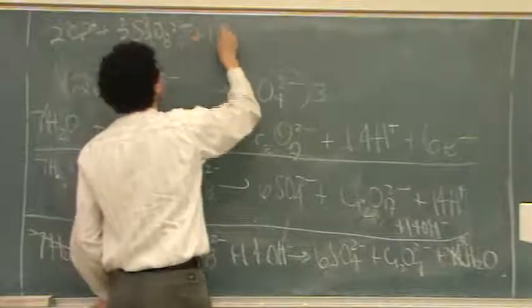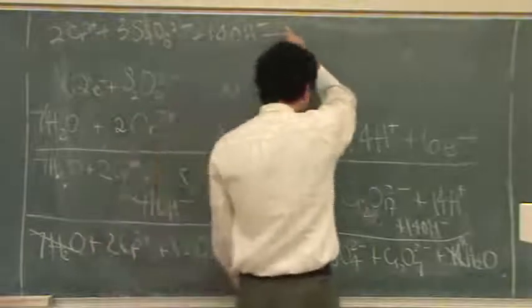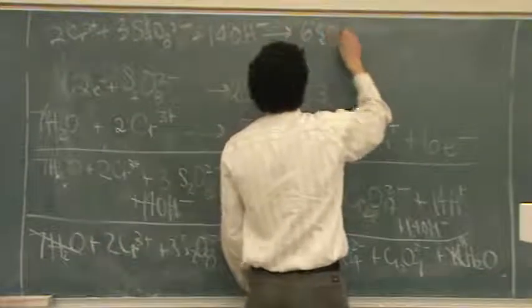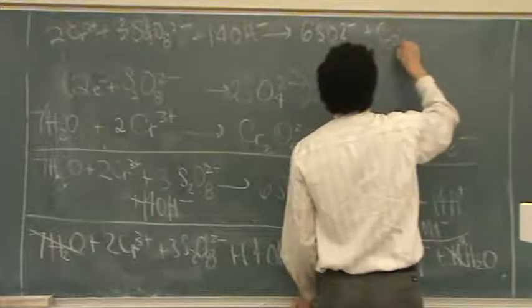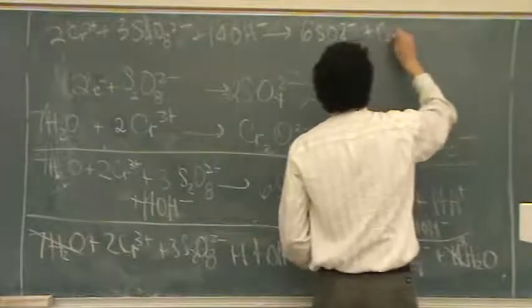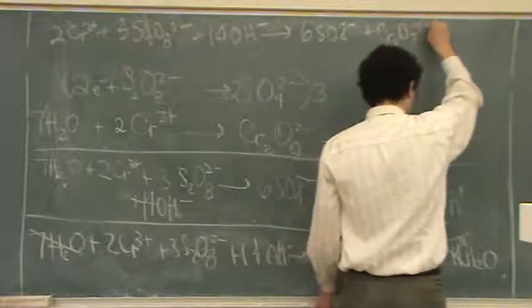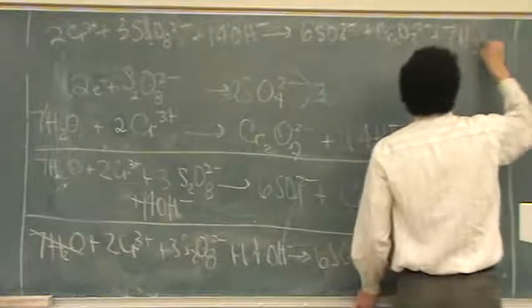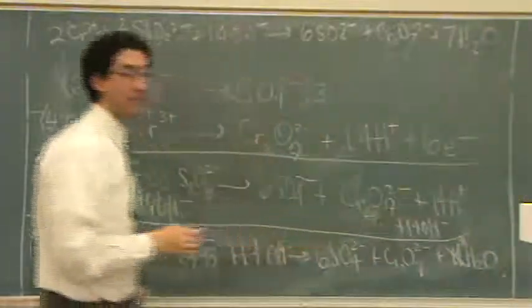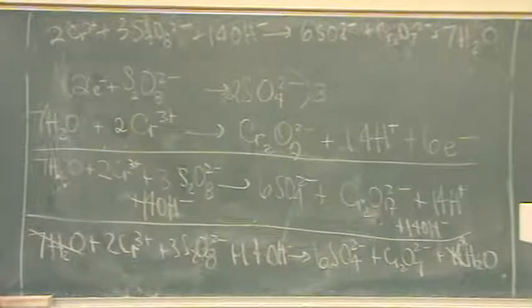Plus 14 hydroxide ions goes to six sulfate ions plus the dichromate plus seven waters. And that's my basic answer if I did everything with no math mistakes. That should be my basic answer.